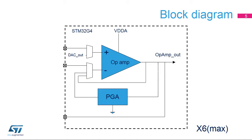This slide shows the block diagram of the operational amplifiers. The STM32G4 integrates up to 6 operational amplifiers. Several switches are used to configure different functions, and each op-amp can be configured individually.